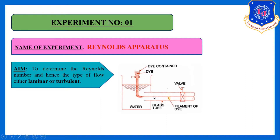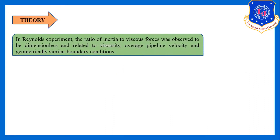In the Reynolds experiment, the ratio of inertia to viscous forces is observed, which is a dimensionless quantity. That quantity is related to viscosity, average pipeline velocity, and geometrically similar boundary conditions.